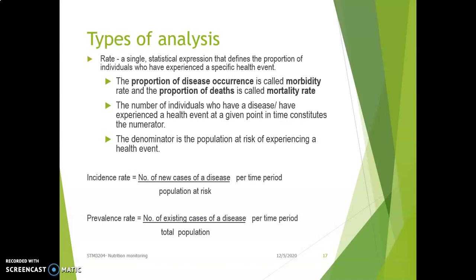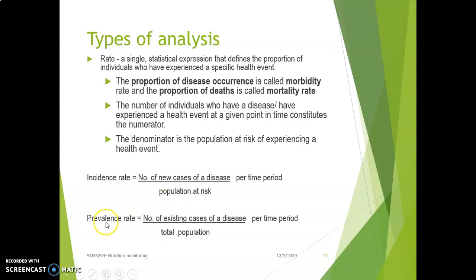There are types of analysis rates: incidence rate and prevalence rate. Incidence rate is the number of new cases divided by the population at risk per time period. Prevalence rate is the percentage of existing cases — number of existing cases divided by the total population.